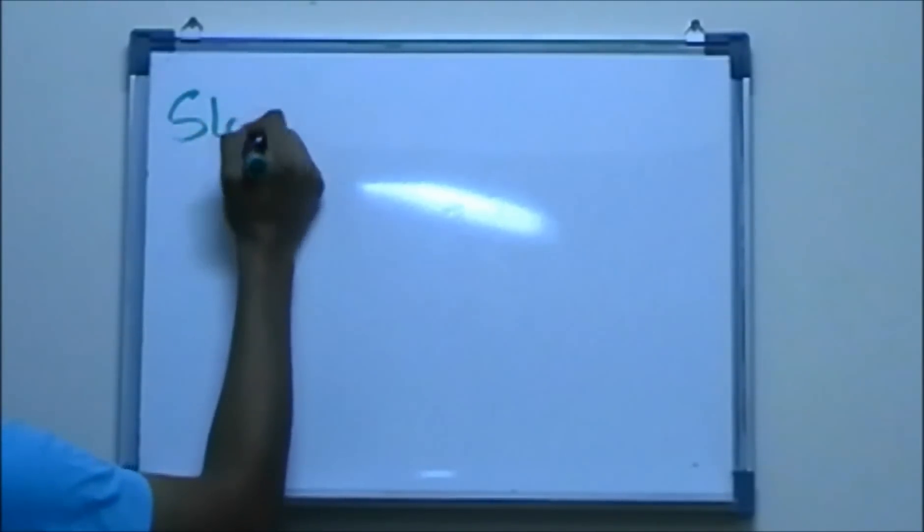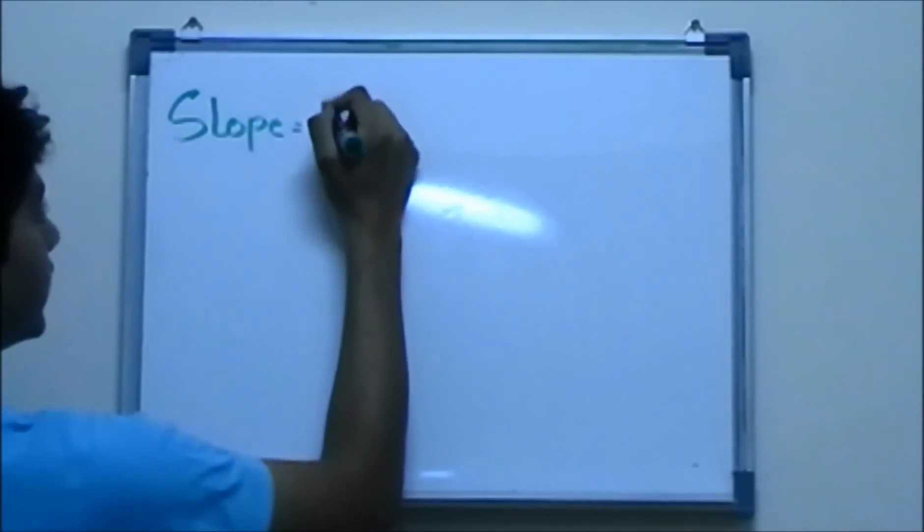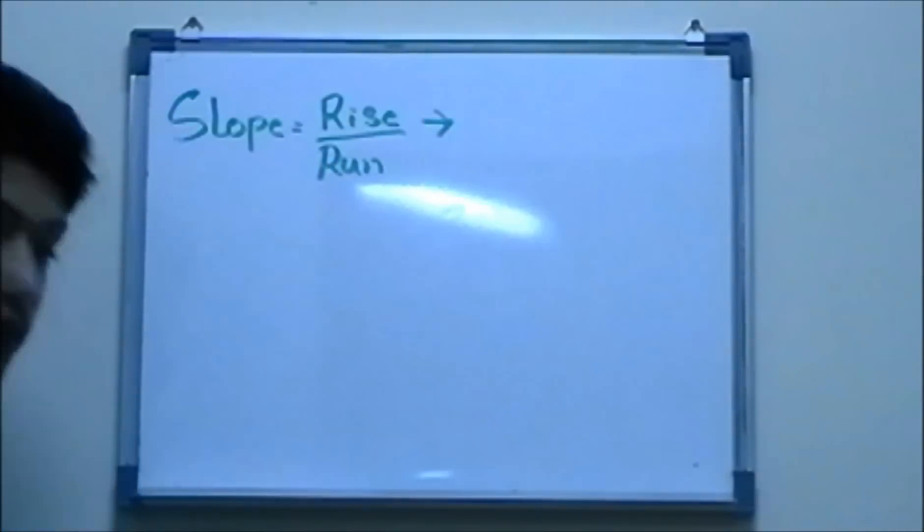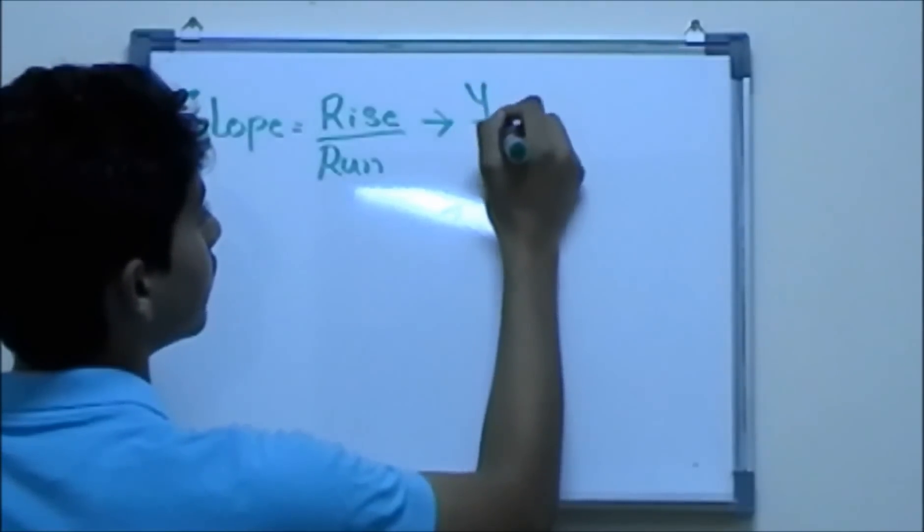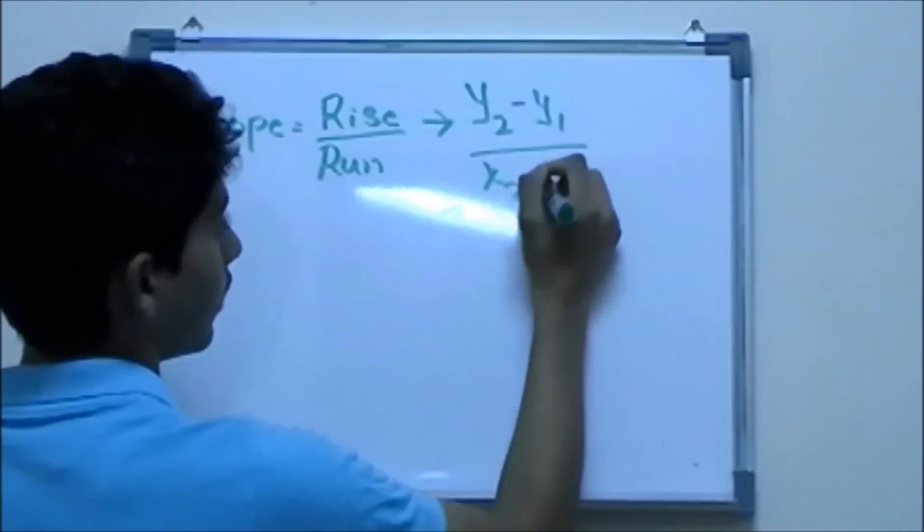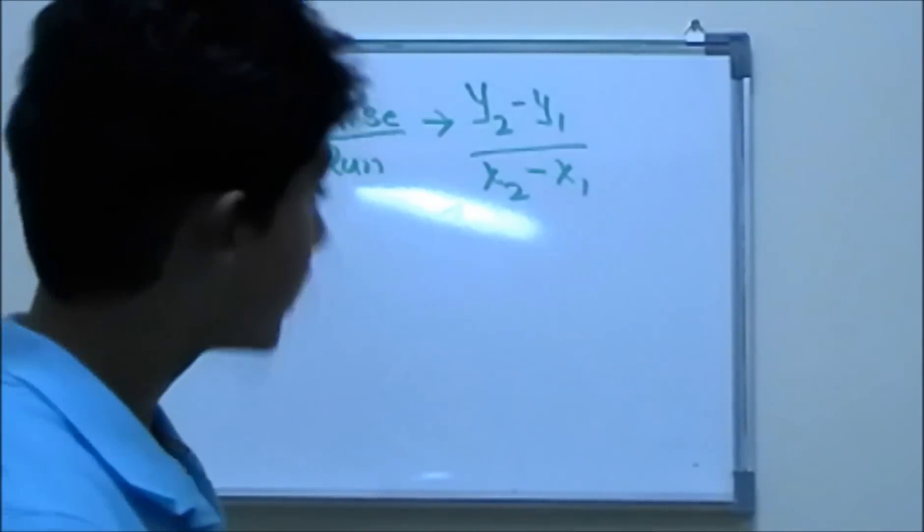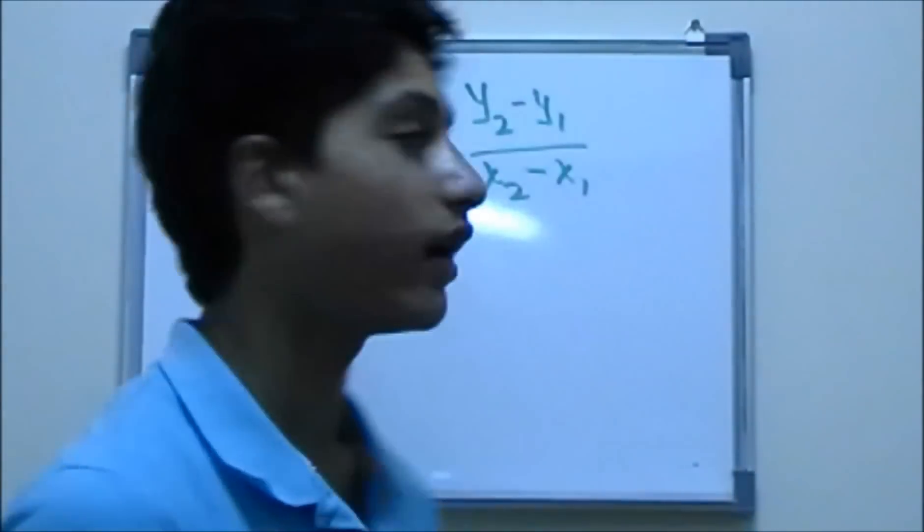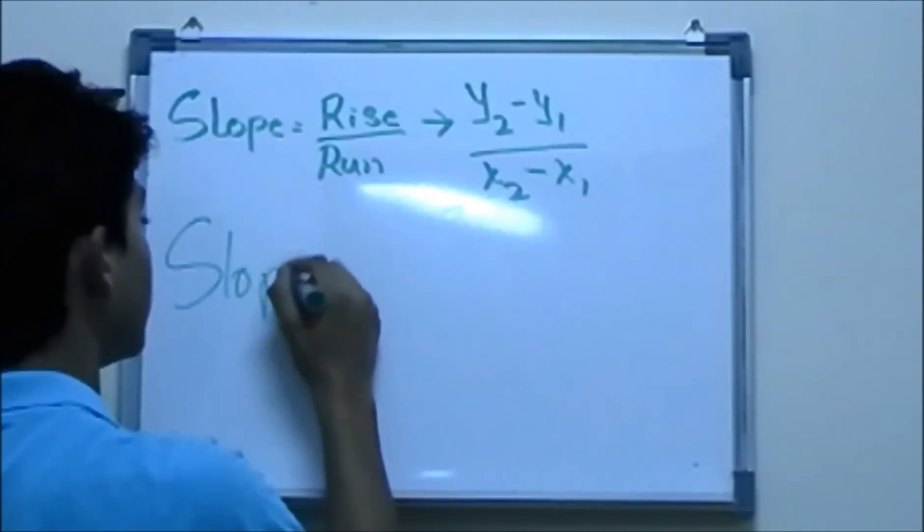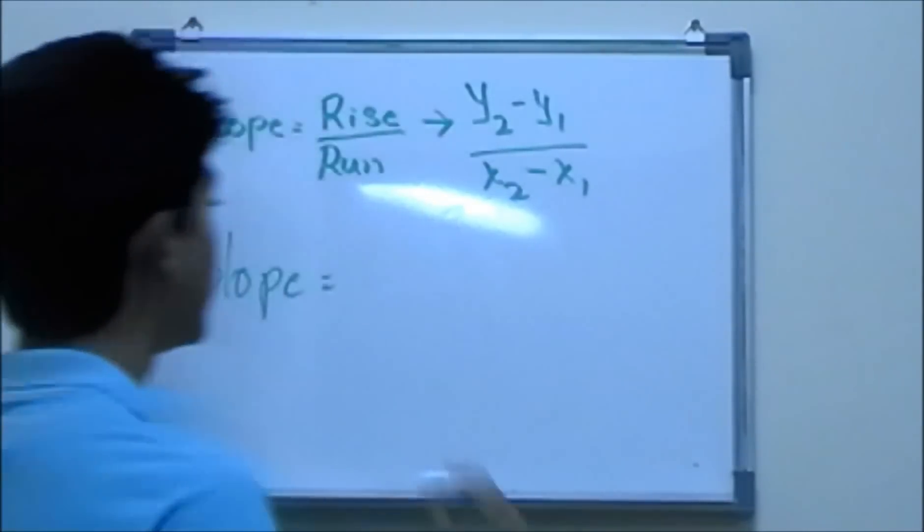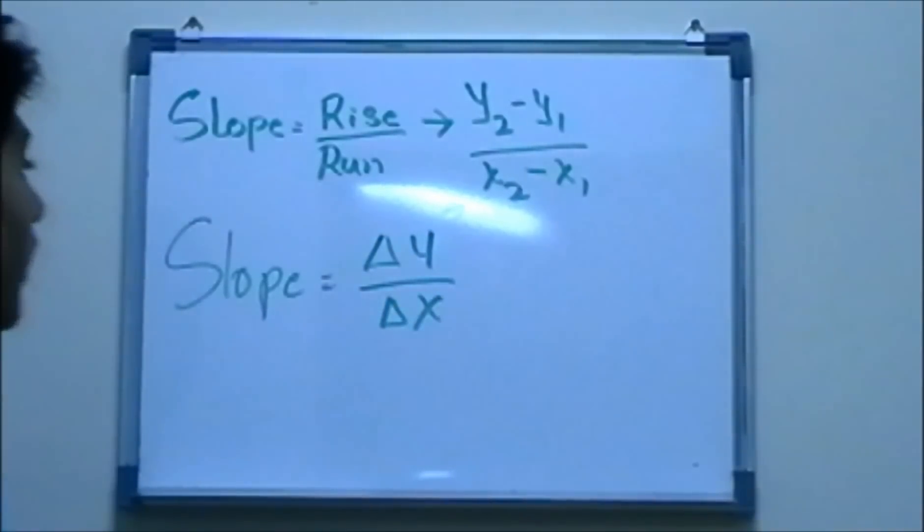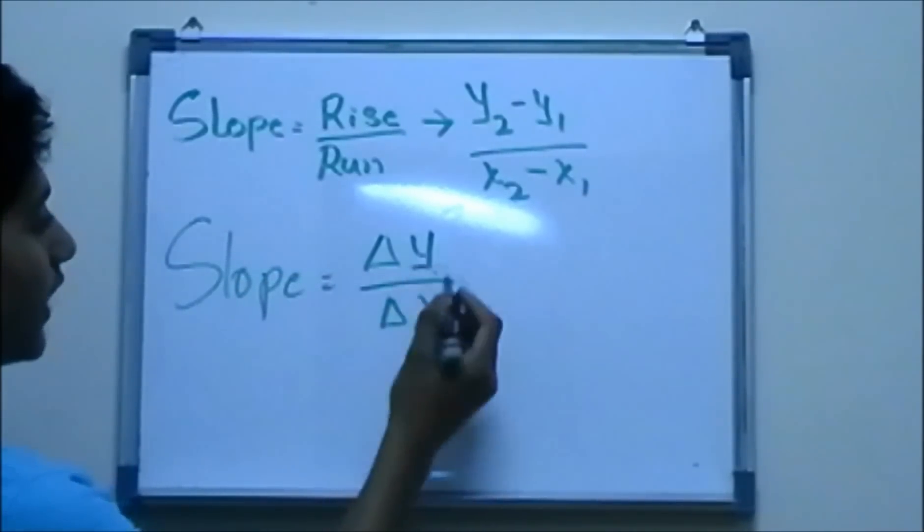Slope for any line is equal to rise over run, as you guys might have known. And rise over run is equal to y2 minus y1 over x2 minus x1. So all we are trying to find is changing y values and changing x values. When you have change in something, you have delta in something. So slope is also equal to, and this is what we use in calculus, the symbol of delta. This means changing y values and changing x values.